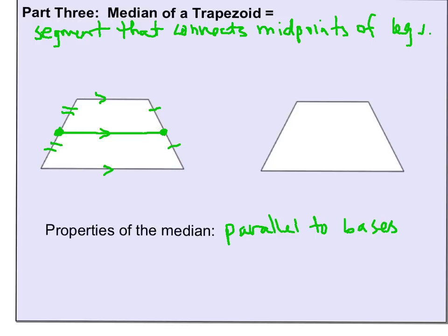So we've got parallel to the bases, we've got these pieces have to be congruent, and then the last thing is how to find the actual length of the median. The length of the median is always half of the sum of the bases. So the length of the median is one half times base one plus base two.